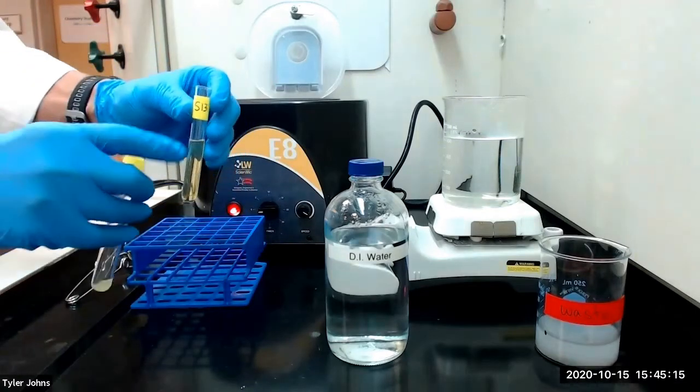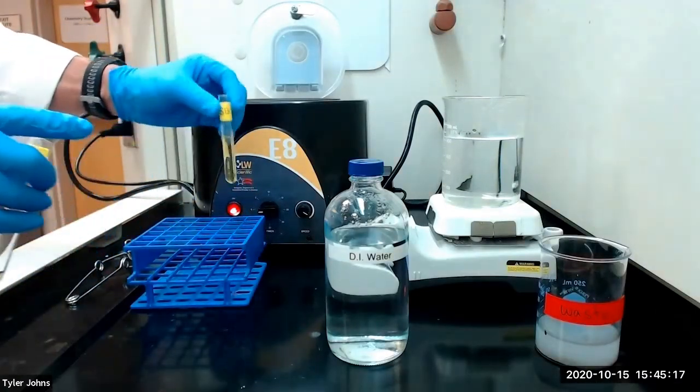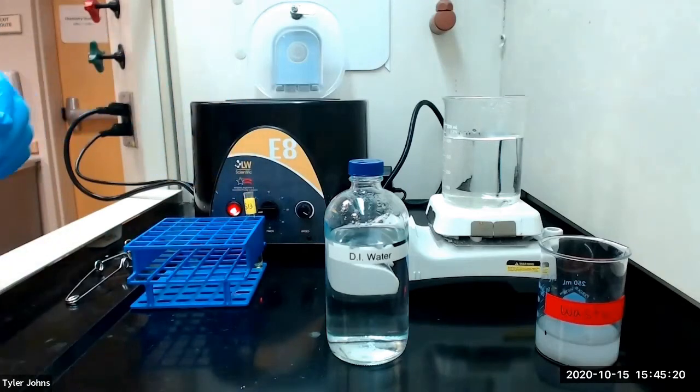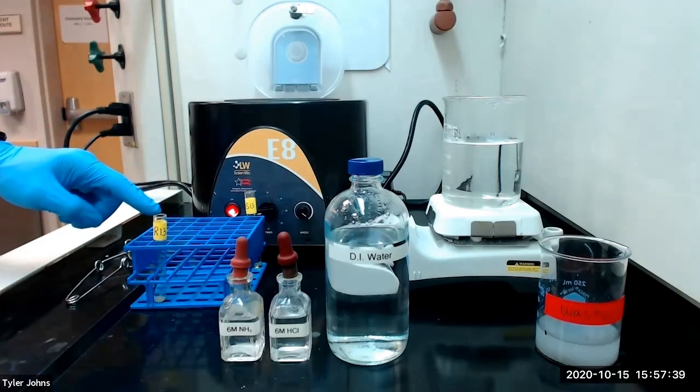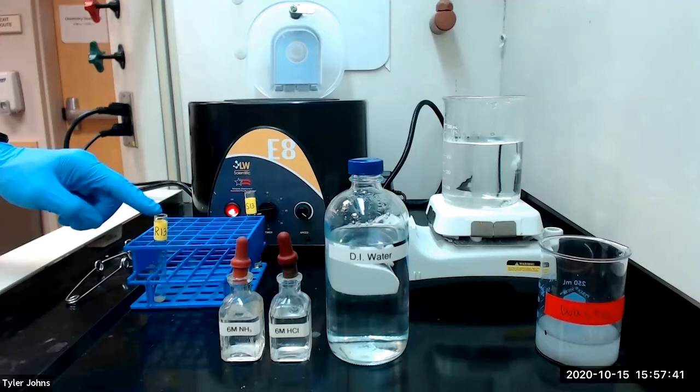We will set solution 13 aside for the chromium test. We've relabeled our residue with the aluminum flocculate as R13 for residue 13.